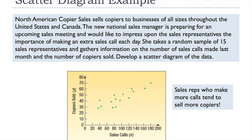With this data, the number of sales calls is the independent variable and copiers sold is the dependent variable. For example, the first salesperson Brian made 96 calls and sold 41 copiers, so we go along the horizontal axis to x = 96 and vertically to y = 41. That point represents Brian's data. You do this for each individual in the sample. The dots trend in a positive direction, though not perfectly on a straight line.